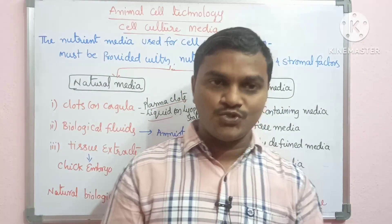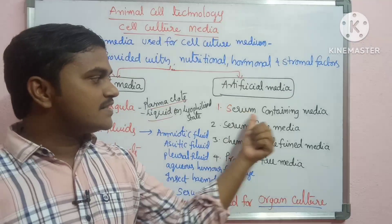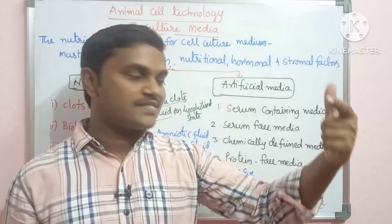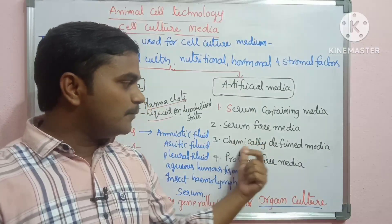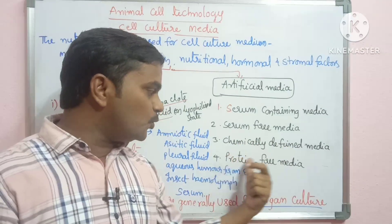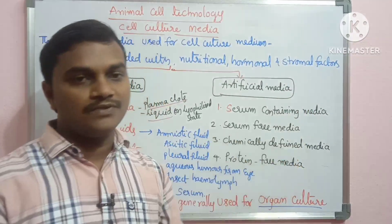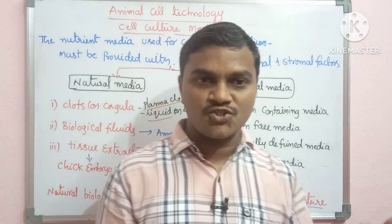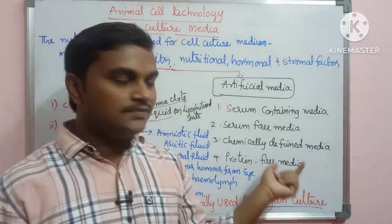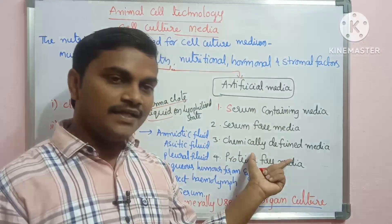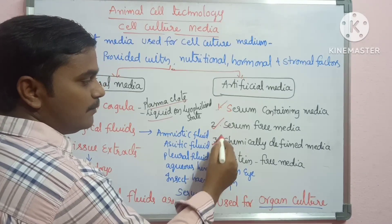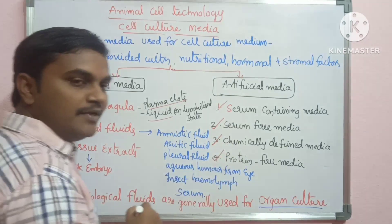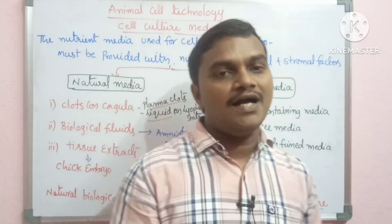If you look at artificial media, there are different types: serum-containing media, serum-free media, chemically defined media, and protein-free media. These artificial media are used to grow cells, tissues, and organs.